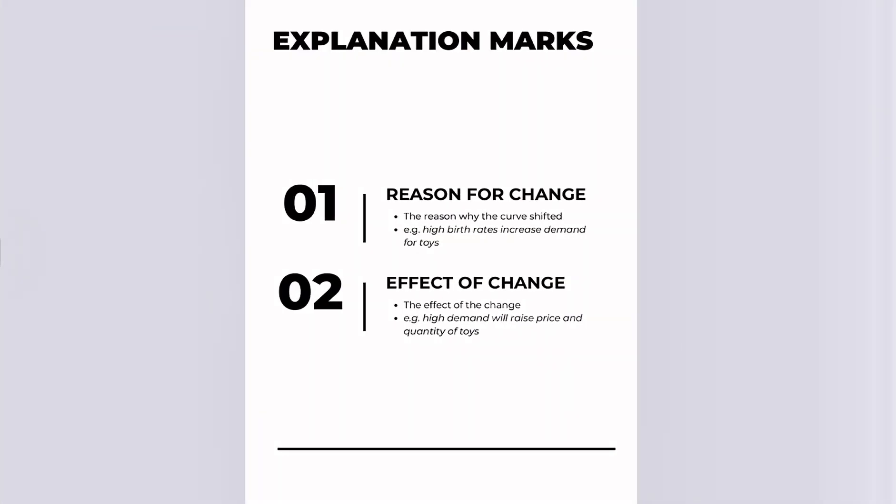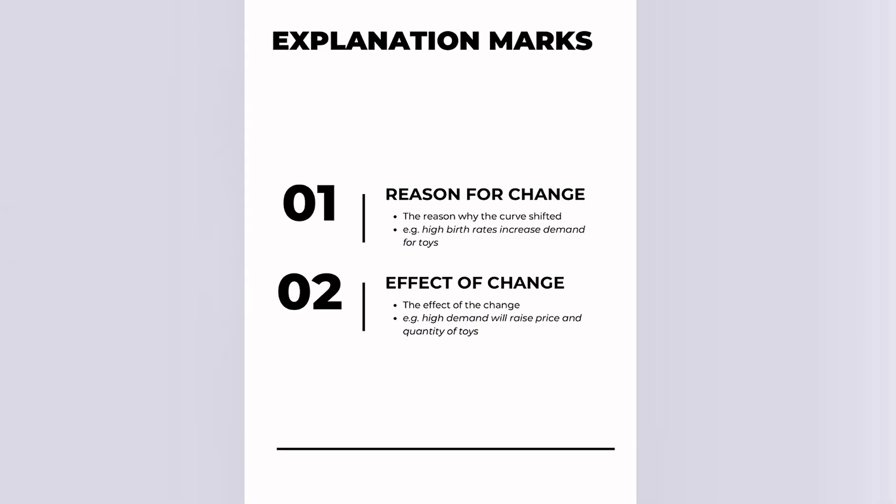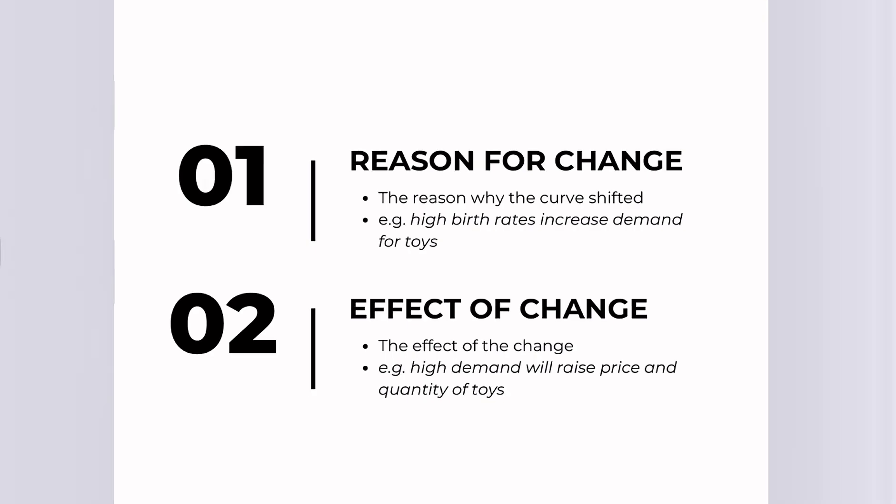Now this is a guide on how to get both marks for the explanation marks for your diagrams. This will be applicable to questions that require you to analyse using a diagram. So the first mark comes from the reason for the change. So for example, high birth rates will increase the demand for toys. And then a second mark comes from the effect. So for example, high demand will raise price and quantity of toys. So this is the effect of the reason. And that's how you get both marks.